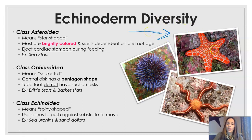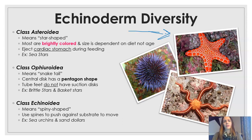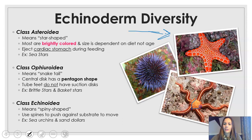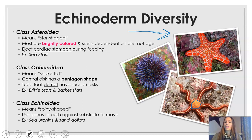Next up is class Ophiuroidea. These are similar to sea stars because they do still have arms arranged in fives — or tens and other multiples of five — but their central disc has a pentagon shape. Their tube feet are also a little different because they don't have the little suction discs like sea stars do. They kind of flail around like a snake in the water, which is where their meaning of 'snake tail' comes from.